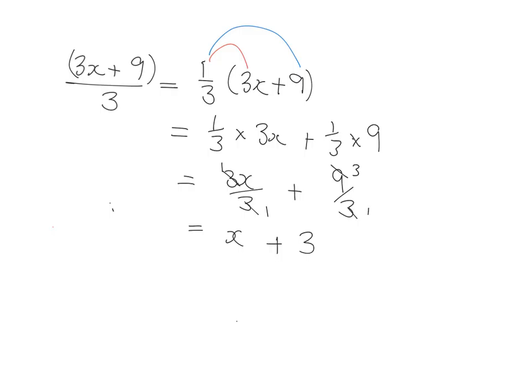So really all this is is a case of the distributive law. This just means a third of 3x plus 9, so we're going to get a third of 3x which is 3x over 3, and a third of 9 which is 9 over 3. So we can actually do this a little more quickly if we just think, okay, this is a third of 3x which is 3x over 3, and a third of 9 which is 9 over 3.